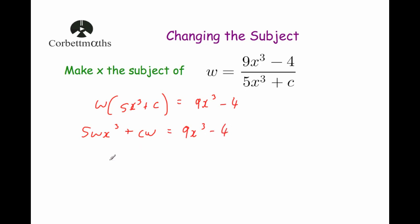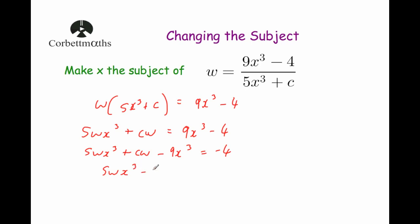Now again, we want to bring the x's to one side and everything else to the other. So I'm going to subtract 9x cubed from both sides. That will give us 5wx cubed plus cw subtract 9x cubed equals negative 4. So we're now going to subtract cw from both sides, leaving us with 5wx cubed subtract 9x cubed equals negative 4 subtract cw.